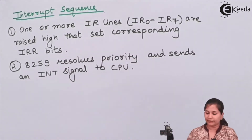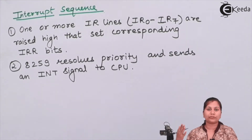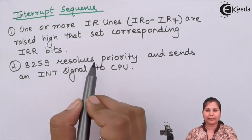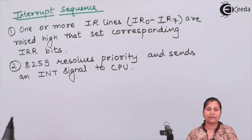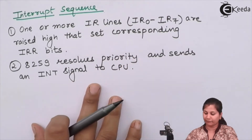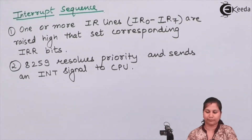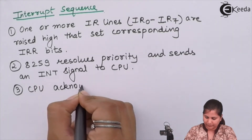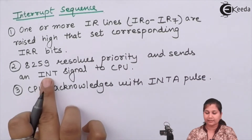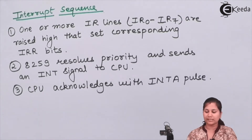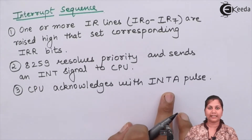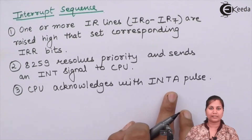If more than one interrupt request is generated simultaneously, priority is decided and the highest priority interrupt is selected. In response to that interrupt request, an INT signal is sent to the CPU. When the INT signal is received, the CPU acknowledges it with an INTA pulse, indicating it has received the interrupt request.